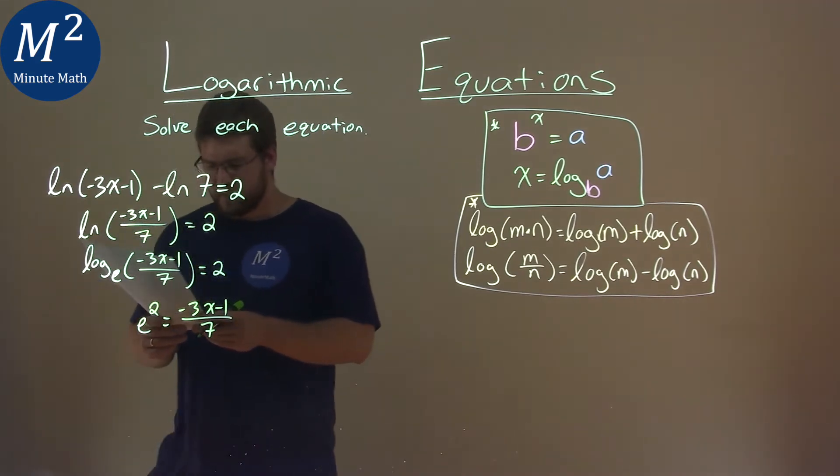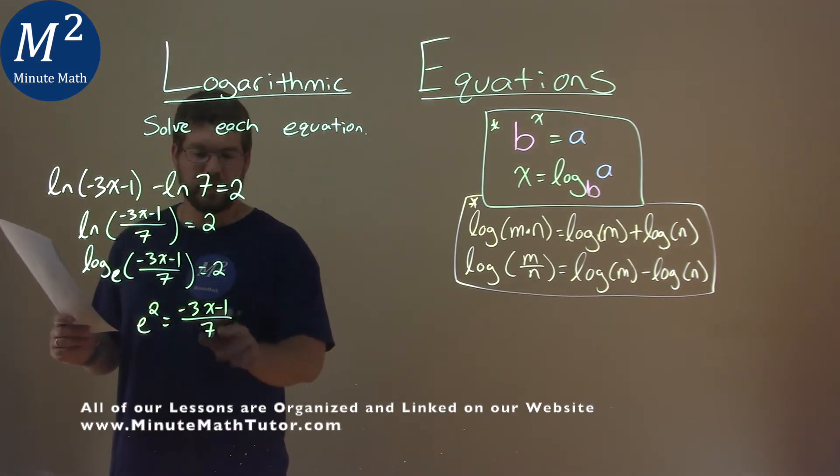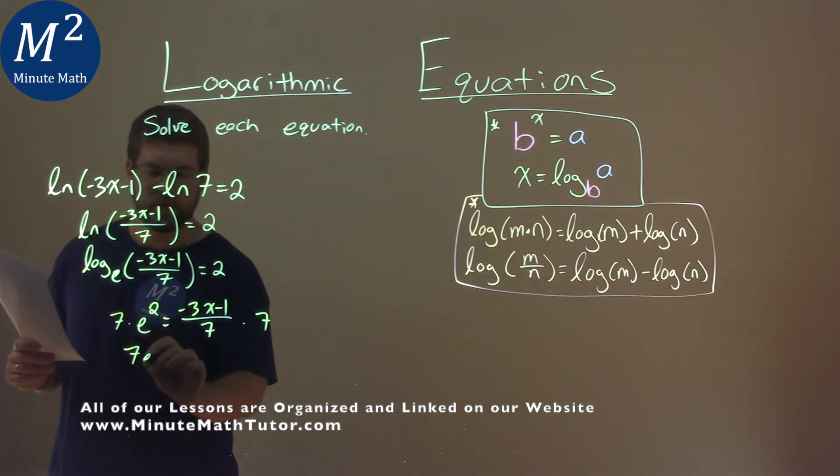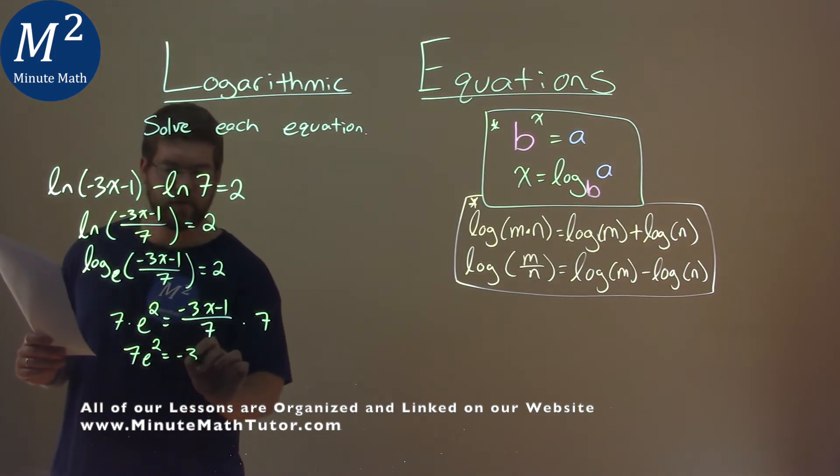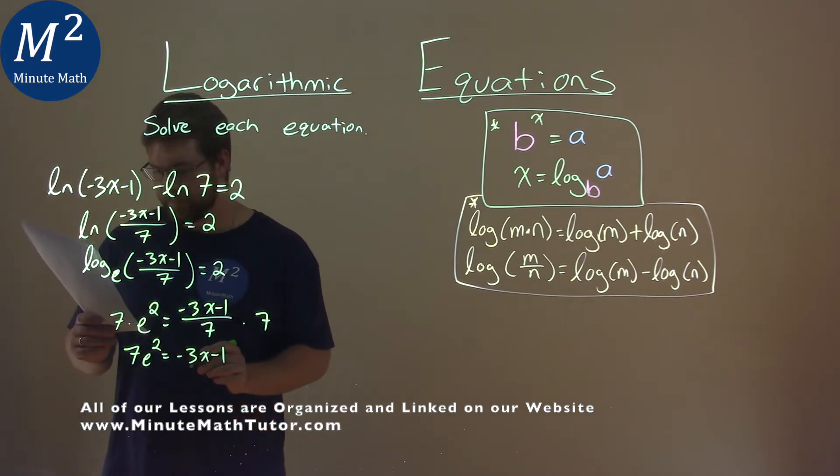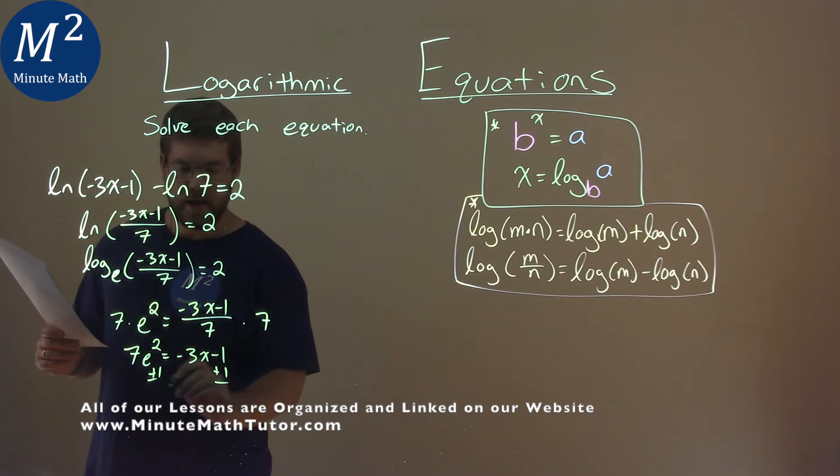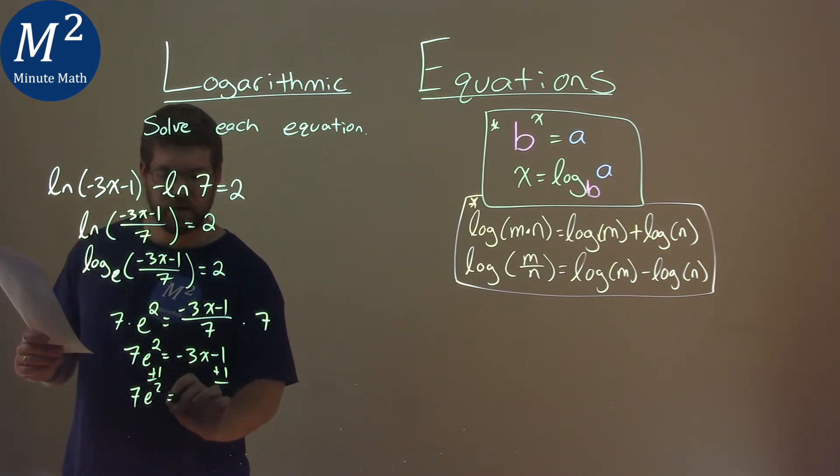Well, here we want to get x by itself. So I multiply both sides by 7 here, and I have 7e squared is equal to negative 3x minus 1. I'm going to add 1 to both sides, and I have 7e squared equals negative 3x.